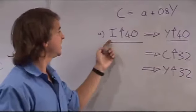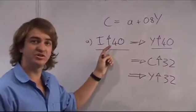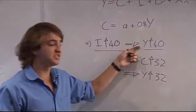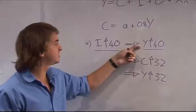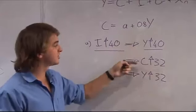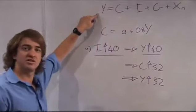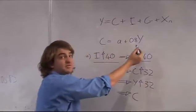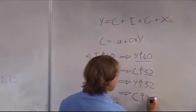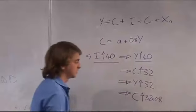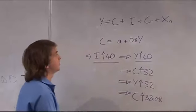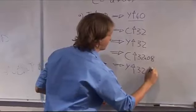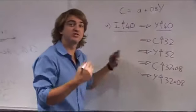So now you can see income has already increased by a lot more than the original increase in investment of 40. Investment increases by 40, income or GDP increases by 40. But because income or GDP increases by 40, consumption increases by 32. But then because consumption increases by 32, income increases by 32. Therefore, if income increases by 32, consumption increases by 32 times 0.8. And then if consumption increases by 32 times 0.8, Y is going to increase by 32 times 0.8.